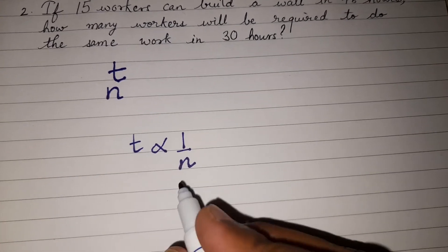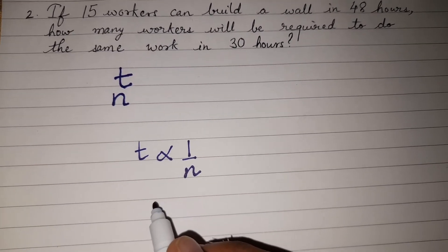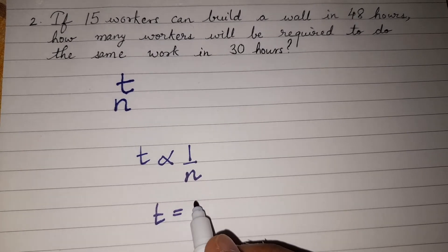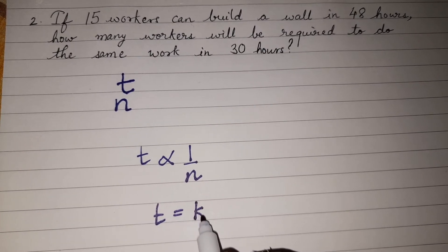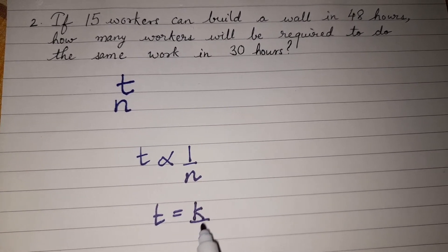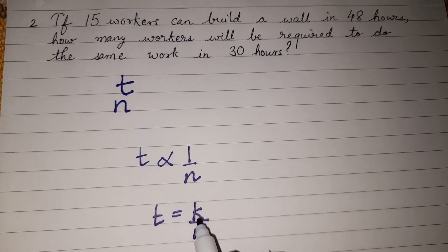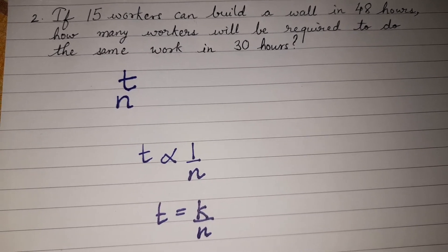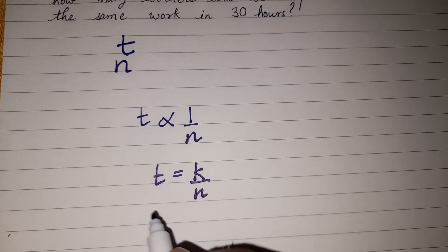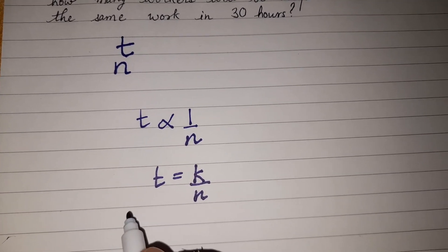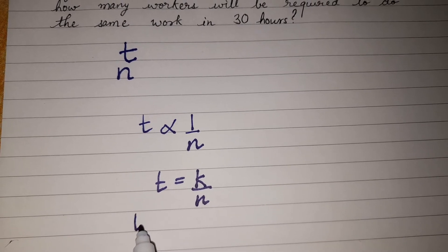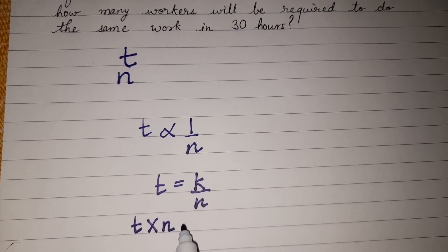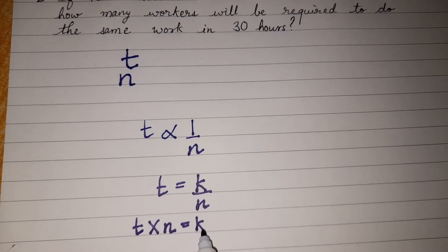We can say t is equal to k over n, where k is the constant of variation or proportion. This can be rewritten as t times n equals k.